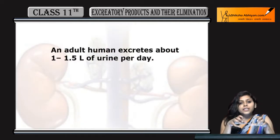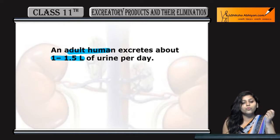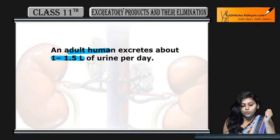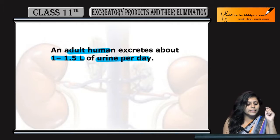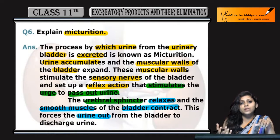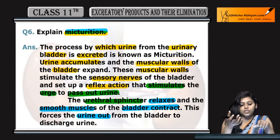Ek adult human jo hai voh excrete karta hai around 1 to 1.5 liter of urine per day. Ek din mein 1 to 1.5 liter urine pass out karta hai koi bhi human being.